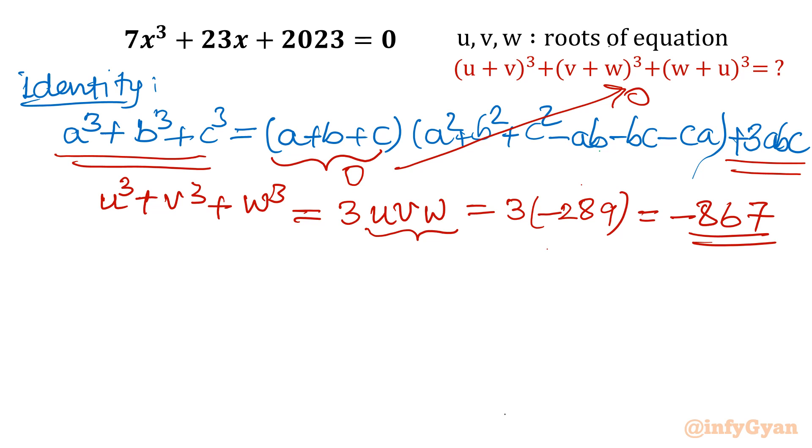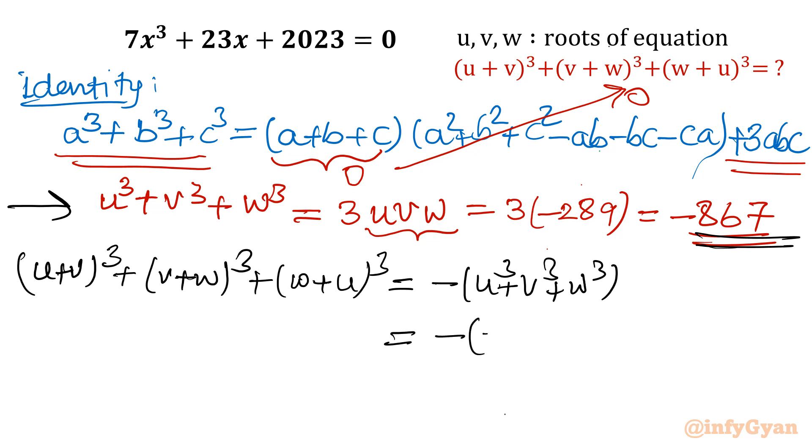Now only write the expression value. That is very simple. Only need to put the value. Let me write here: (u+v)³ + (v+w)³ + (w+u)³. And we have calculated that this value is minus of u³ + v³ + w³. And this value we have already calculated that is equal to -(-867). So that is our ultimate and final answer: 867.